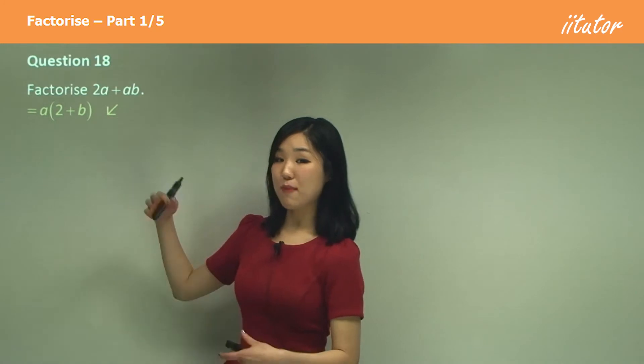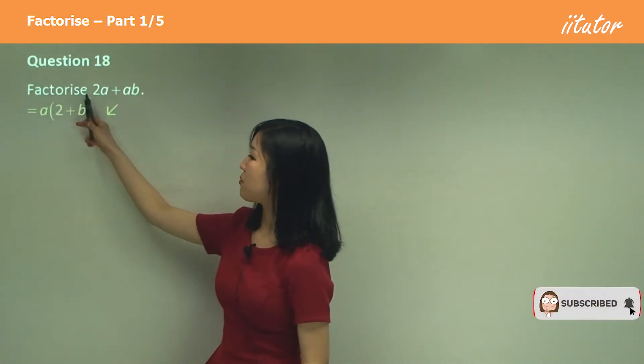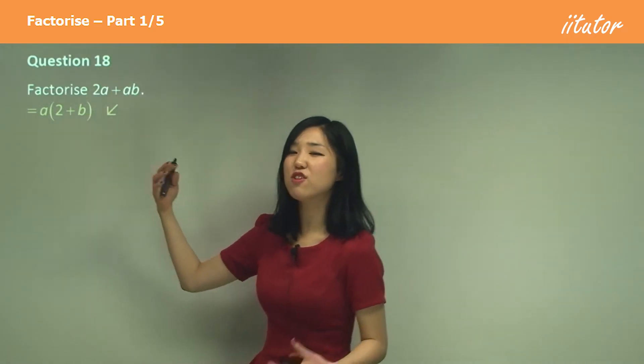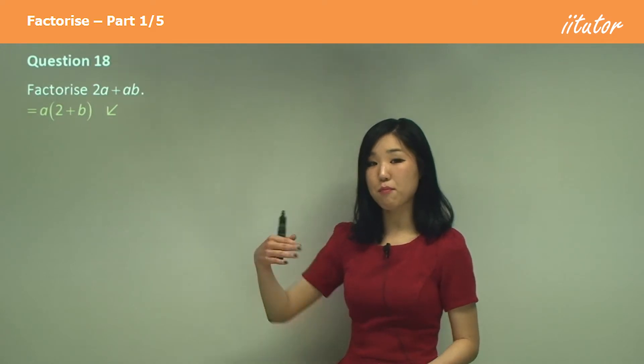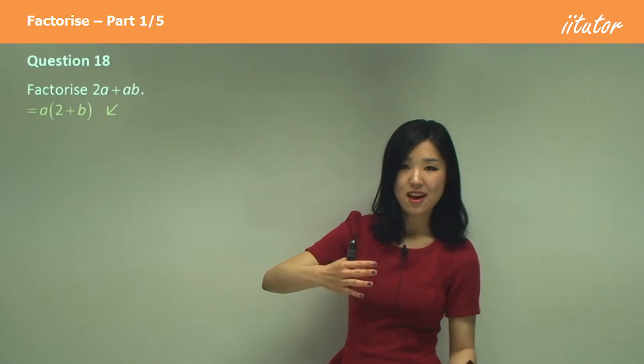When you expand it out, you do the same thing as we did in the previous part: a times 2 and a times b, you should have this. So you can check if you do have the time—you can double check by expanding it.